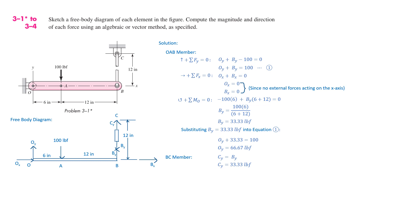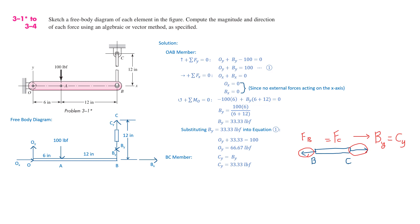Next, we consider the BC member. For the BC member, Cy equals By. This is because for the BC member, forces are acting in opposite directions but are equal — this is tension. So, FB equals FC, which means By equals Cy. If you want to know more about tension, I'll have a video linked in the description below. Since Cy equals By, Cy equals 33.33 LBF.